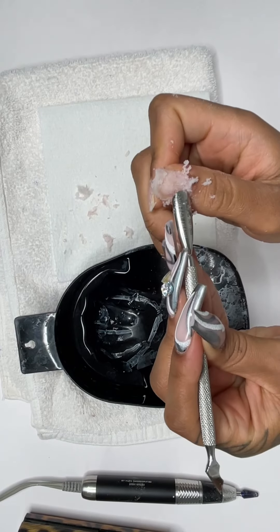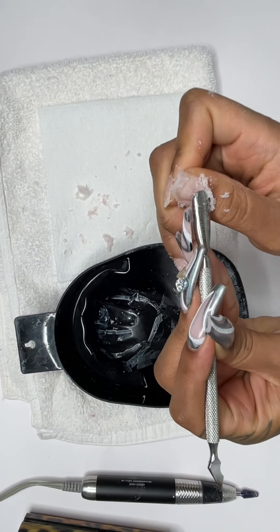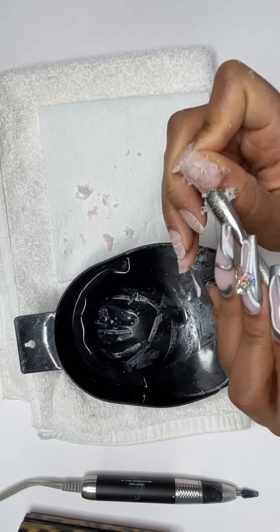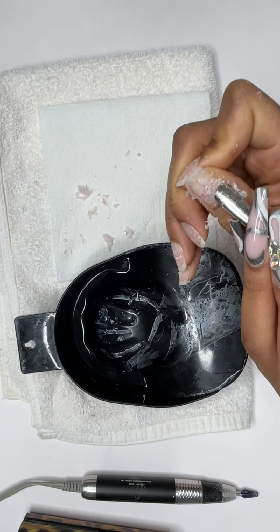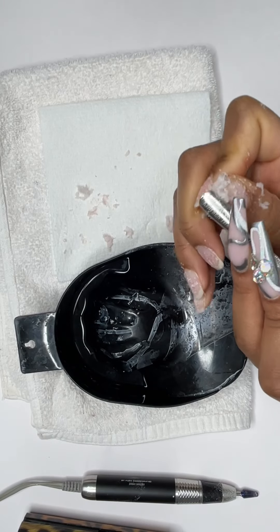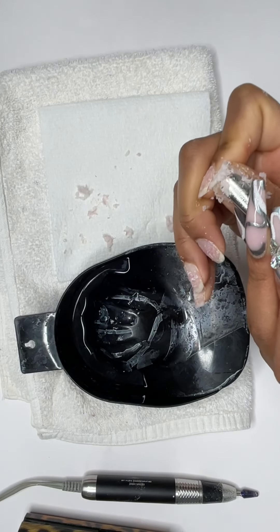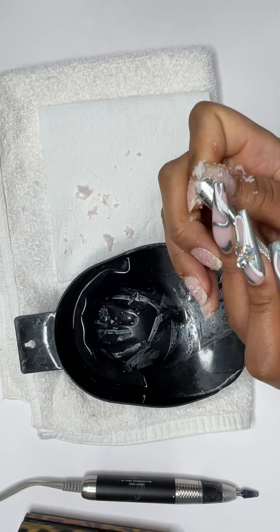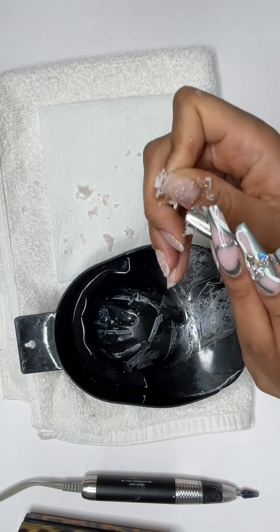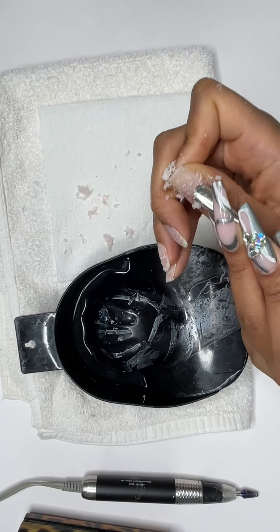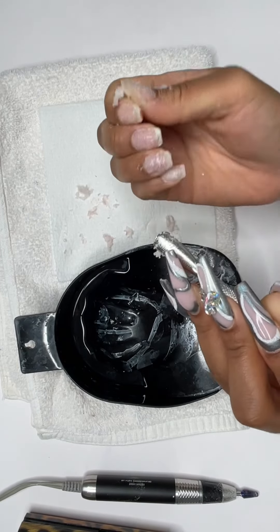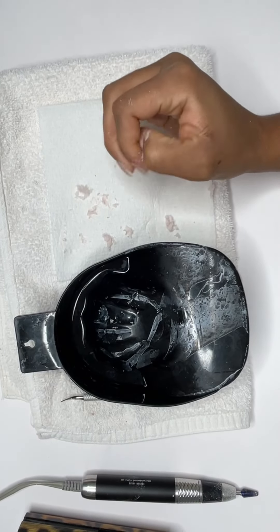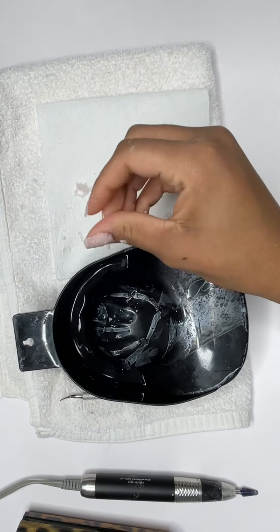I will add, when you are doing the other method as far as the tin foil and the cotton ball, you do waste less product, so if you want to do that method you can. There we have it, all of the acrylic is off of my natural nails.